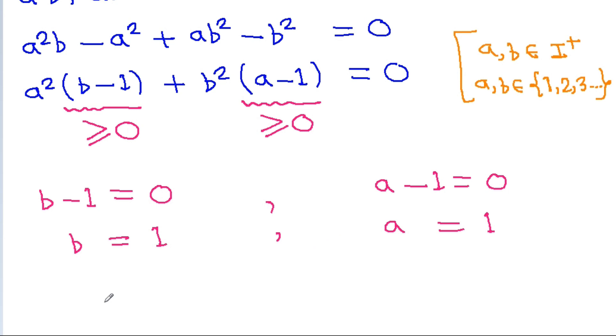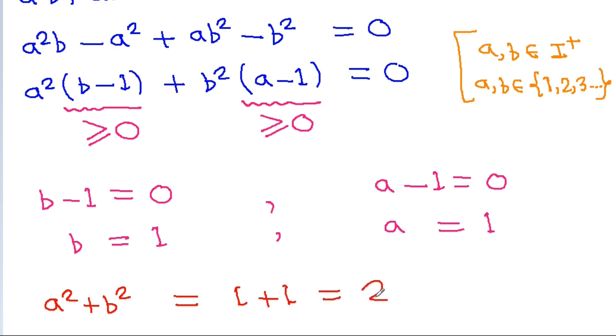So we have to find the value of a squared plus b squared, which is equal to 1 plus 1, that is 2. So 2 is the required value.